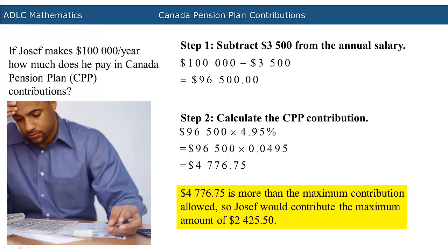But $4,776.75 is more than the maximum contribution allowed, so Joseph would contribute the maximum amount of $2,425.50. Note that the rates used in this problem are the 2014 values.